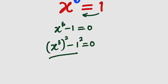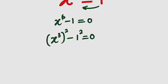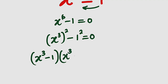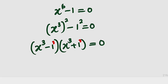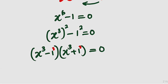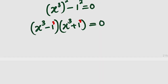And this is nothing but difference of two squares, which can be factorized. We take x to the power of 3 minus 1, we also multiply by x to the power of 3 plus 1, and this will remain equal to 0. These two factors can also be factorized because naturally 1 can be written as 1 to the power of 3. So we have difference of two cubes and sum of two cubes.